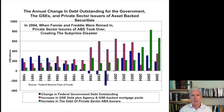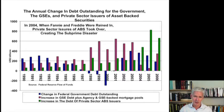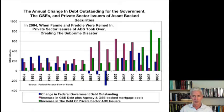So what we've seen is that the U.S. trade deficit threw dollars off into the global economy. They were accumulated by foreign central banks in the trade surplus countries. Those central banks then reinvested those dollars into U.S. dollar assets and blew the United States into a bubble between 1996 and 2008.